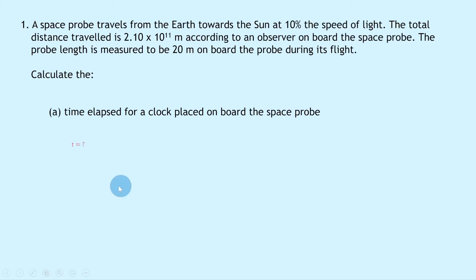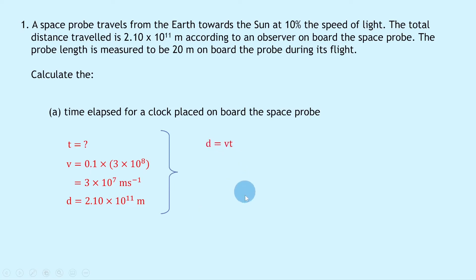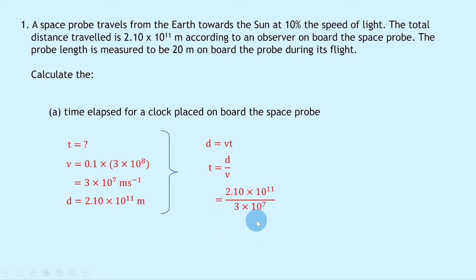That means we can use speed = distance/time to find the proper time t. We know speed v is 10% the speed of light, which is 0.1 times 3 times 10 to the 8, equaling 3 times 10 to the 7 meters per second. The distance is 2.10 times 10 to the 11 meters. Writing d = vt and rearranging for t gives t = d/v. Substituting in, we get 2.10 times 10 to the 11 divided by 3 times 10 to the 7, giving an answer of 7,000 seconds.